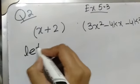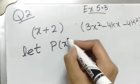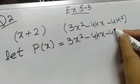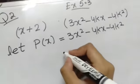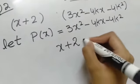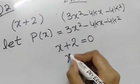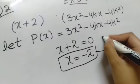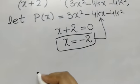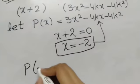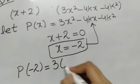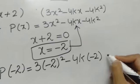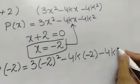We will let our polynomial equal to p of x. Now we will take our divisor equal to 0, so x value will be minus 2. We will put our value of x in this polynomial term. So it will be p of minus 2: 3 times (minus 2) whole squared minus 4k times (minus 2) minus 4k squared.